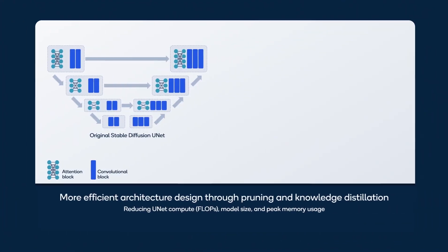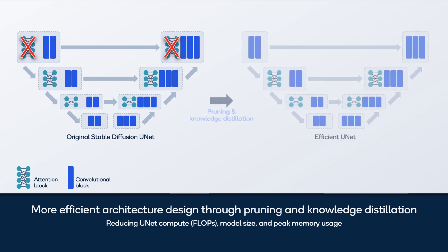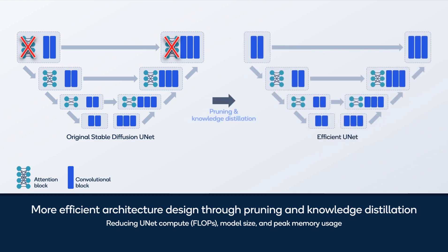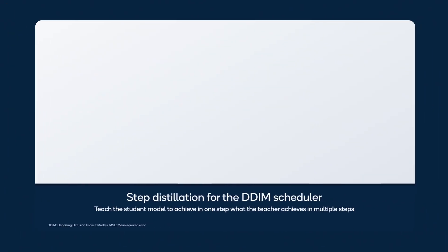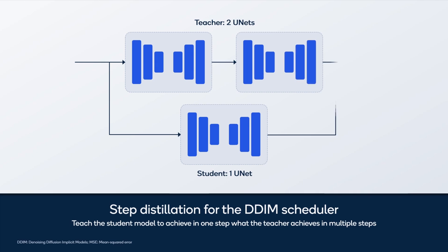For example, we prune the attention blocks in the first layer of the UNET, which saves significant compute. To compensate for reduced capacity, we recover the accuracy of the model through knowledge distillation. To reduce the number of steps, we again use knowledge distillation in which the student model is taught to achieve accuracy closer to a teacher model, which uses many more steps.